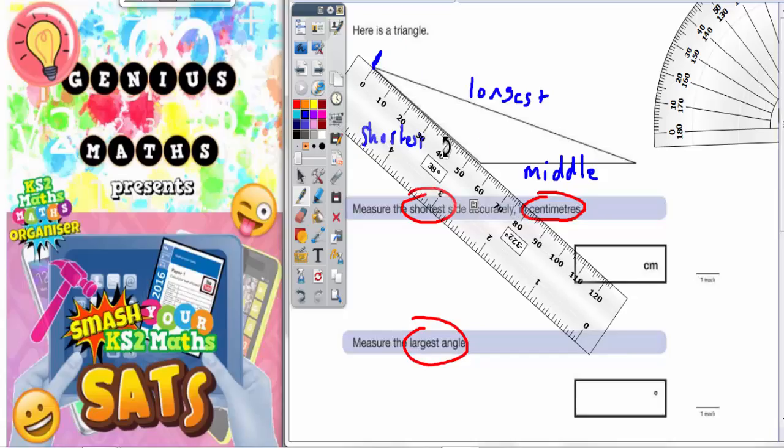We measure as accurately as we can towards the end of the line. Now that's level with 55 millimeters, so 55 millimeters is the same as 5.5 centimeters. So 5.5 is what you would write in there.